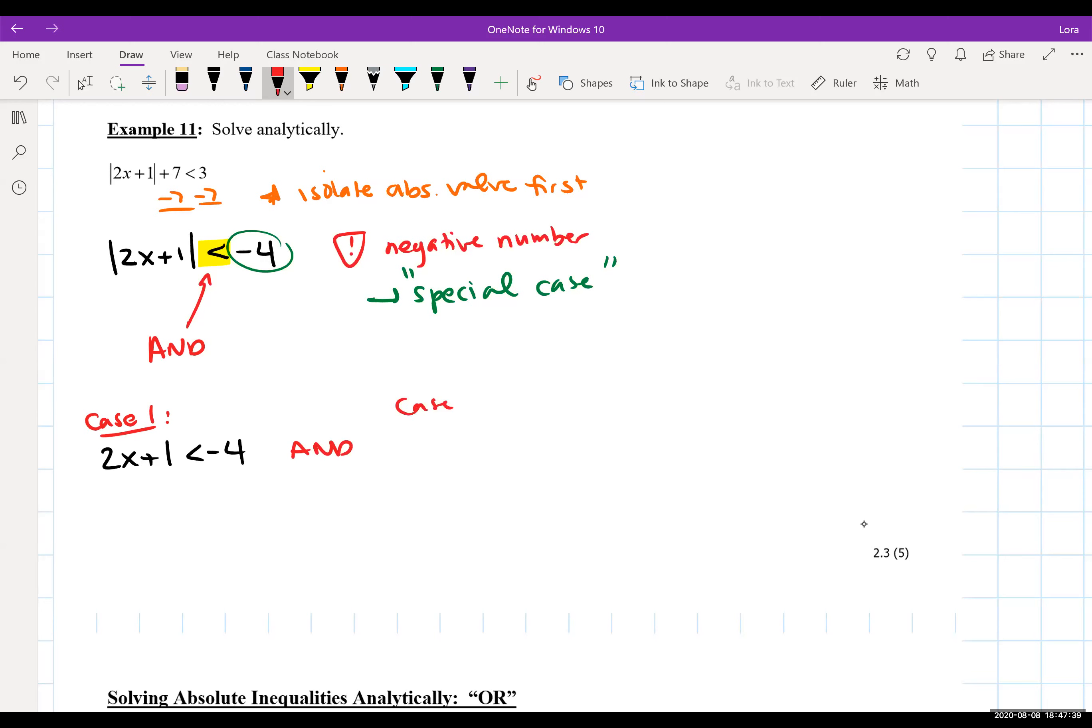In case two, you end up dropping the bars, you reverse the direction of your inequality, and change the sign of the number. So it was negative four, it's now going to be positive four.